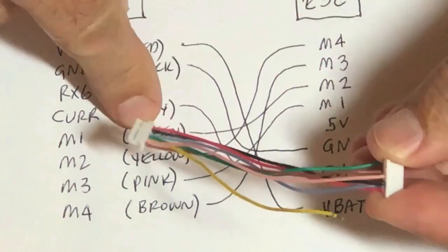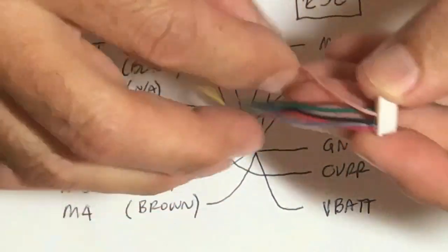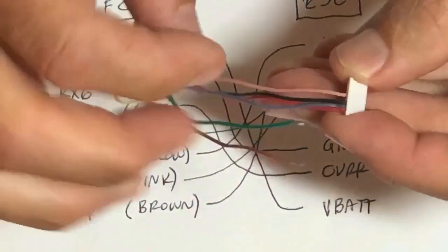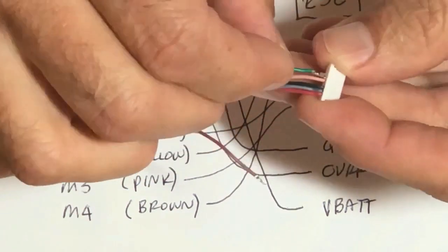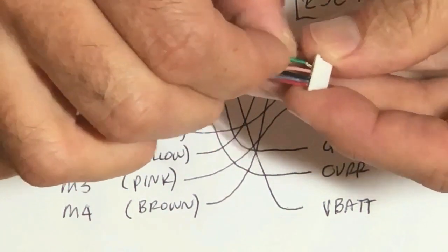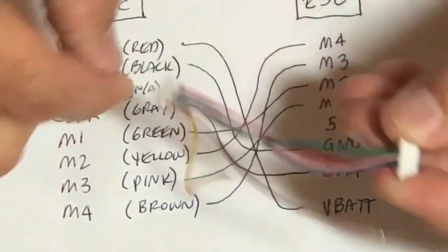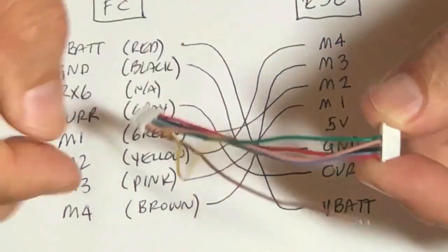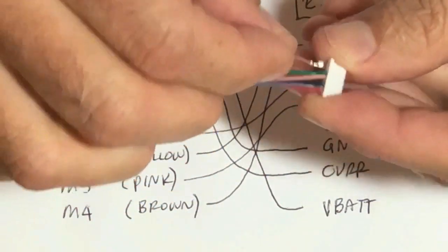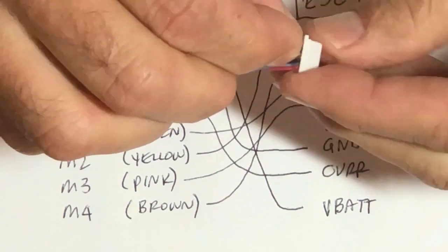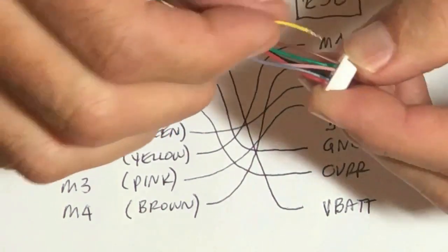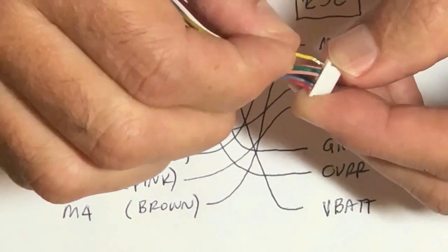Motor two, which is green. Motor three, which is brown. And finally motor four, which is yellow.